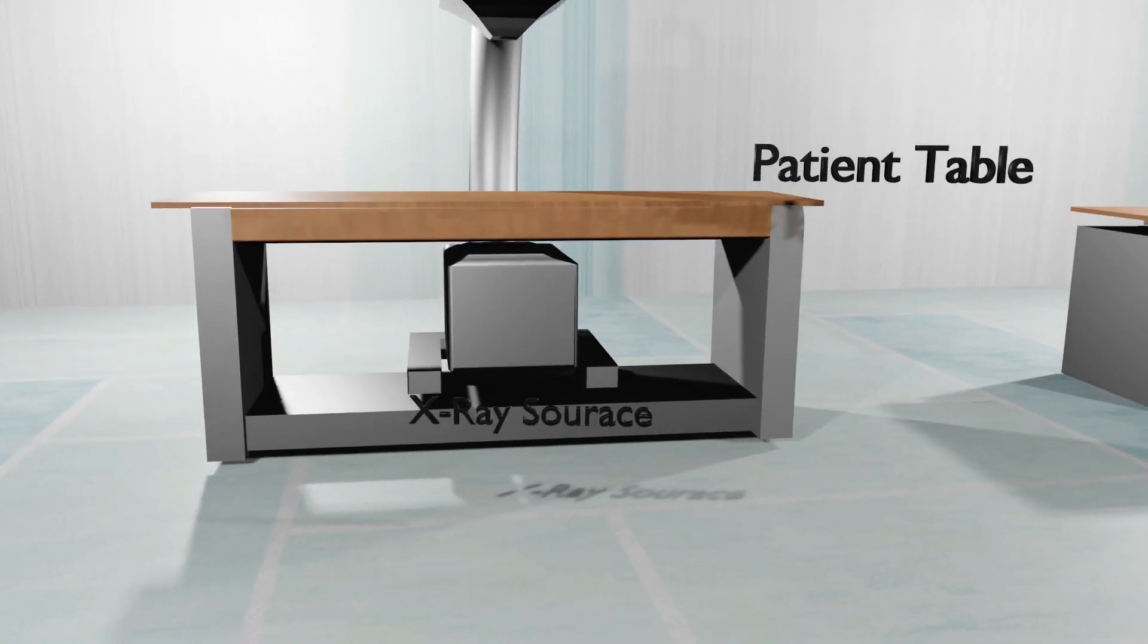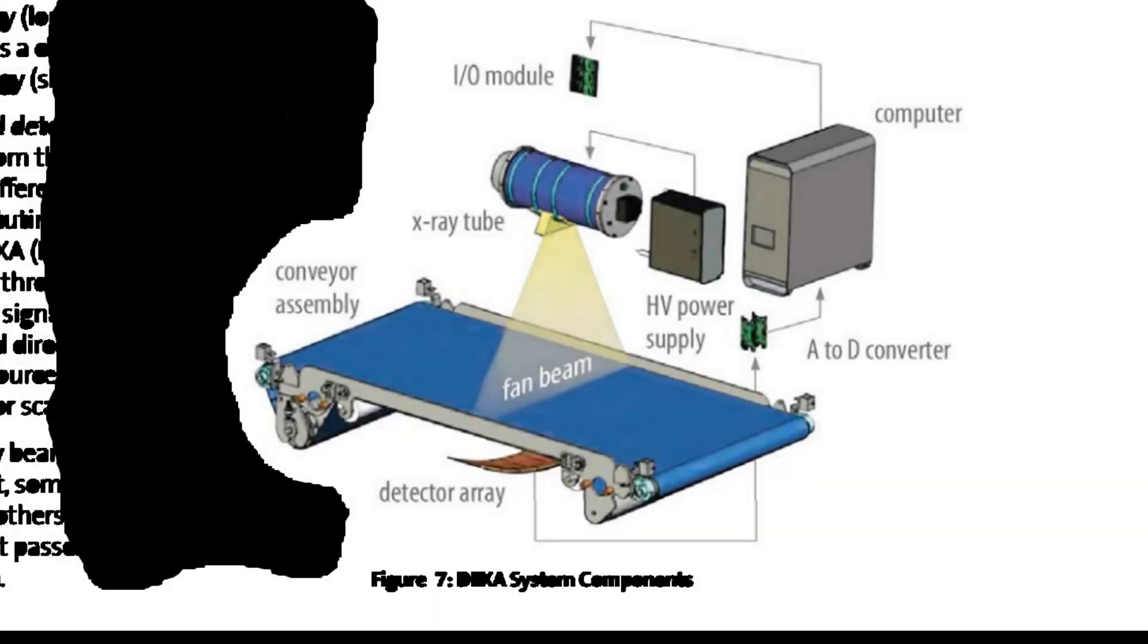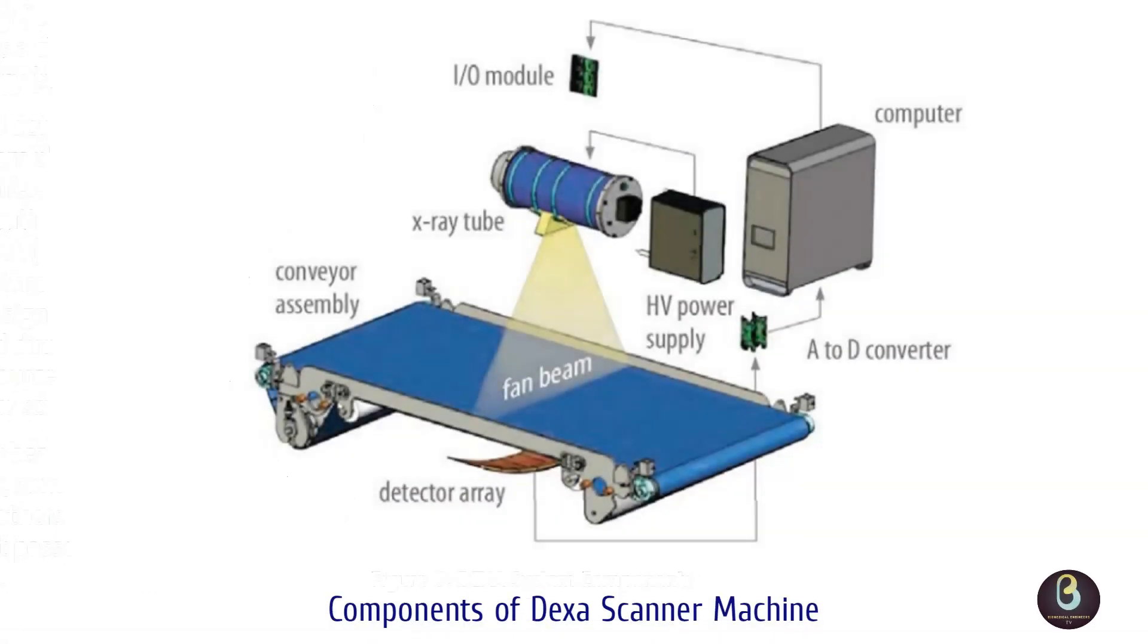The X-ray beam then passes through the product or pack being inspected before finally reaching the detector. The second component is the X-ray generator. The X-ray generator contains an X-ray tube, which generates an X-ray beam.